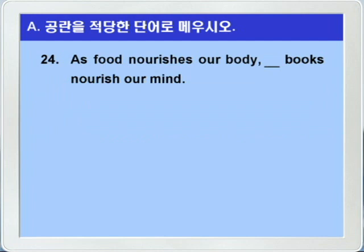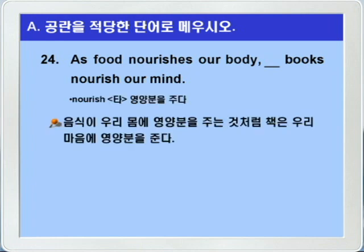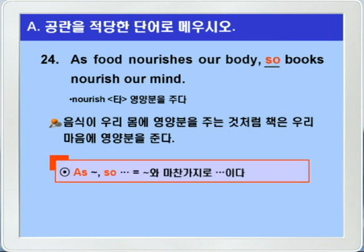24번인데요. nourish는 타동사로 뭐뭐의 영양분을 주다. as는 뭐뭐처럼 이런 뜻으로 사용된 거니까, as food nourishes our body. 음식이 우리 몸에 영양분을 주는 것처럼, 그 다음에 books nourish our mind. 책은 우리 마음에 영양분을 준다. as는 so와 상관적으로 쓰여서, 뭐뭐와 마찬가지로 so 이하하다, 이런 식으로도 사용됩니다. blank에는 so가 들어가면 되겠어요. 현대 영어에서는 잘 사용하지 않는 고어 투라 그랬습니다. 하지만 속담이나 유명한 사람들이 쓴 글에는 자주 나오는 표현이니까 꼭 알아두라 그랬어요. as food nourishes our body, so books nourish our mind.